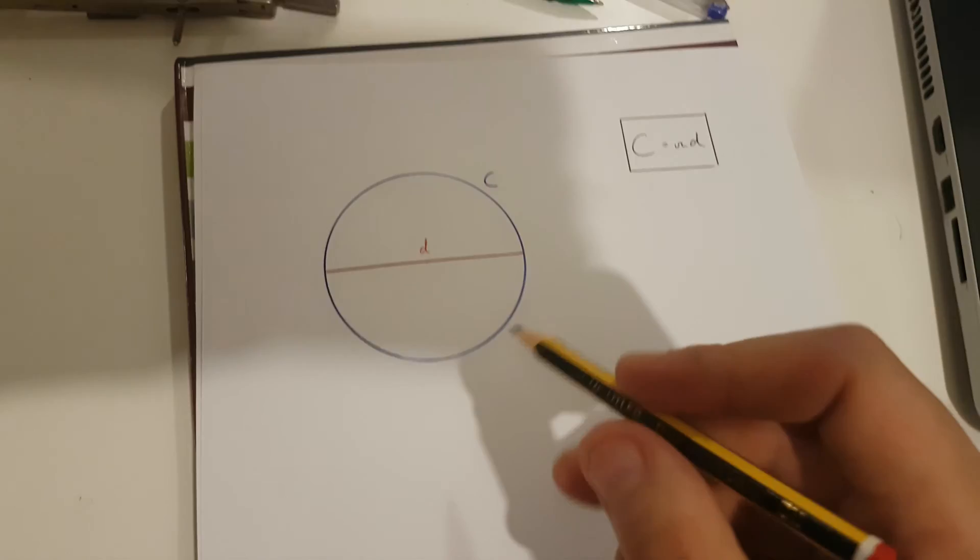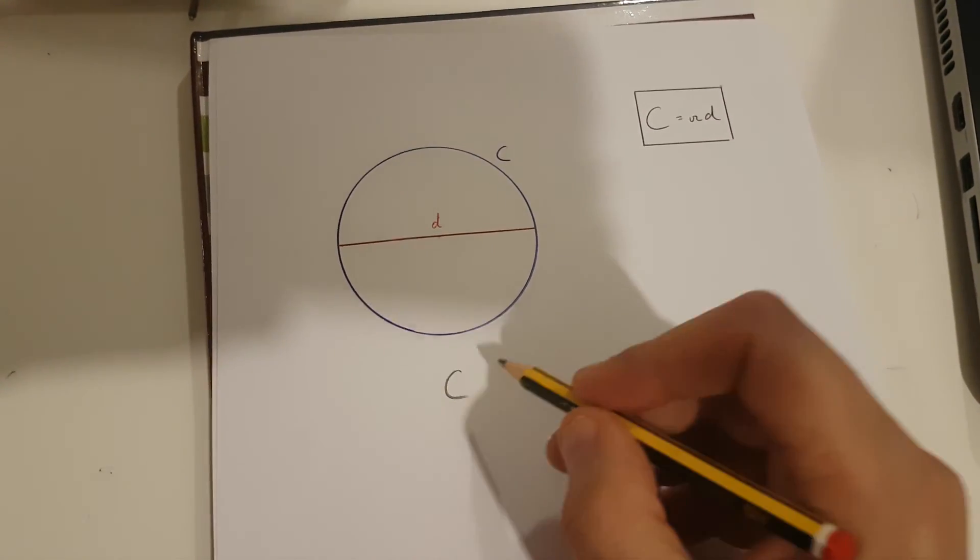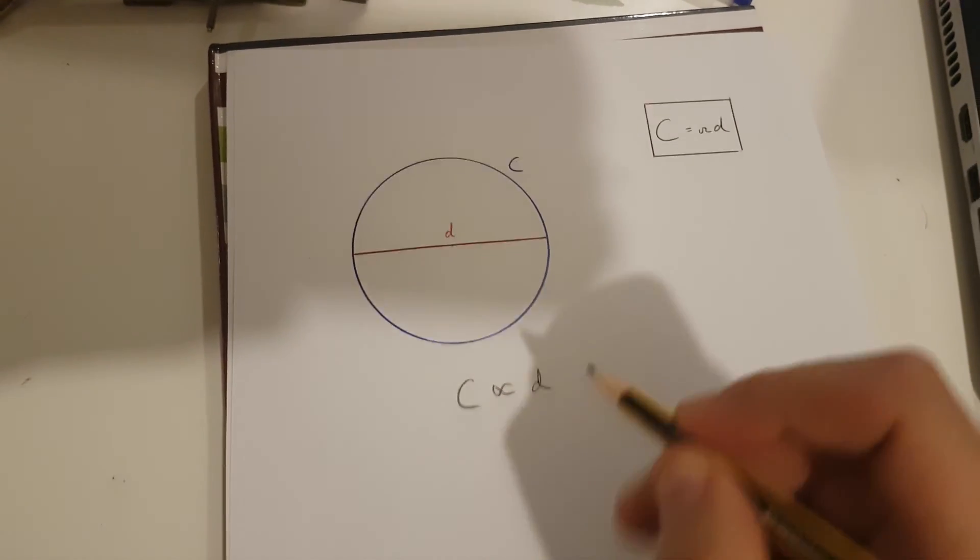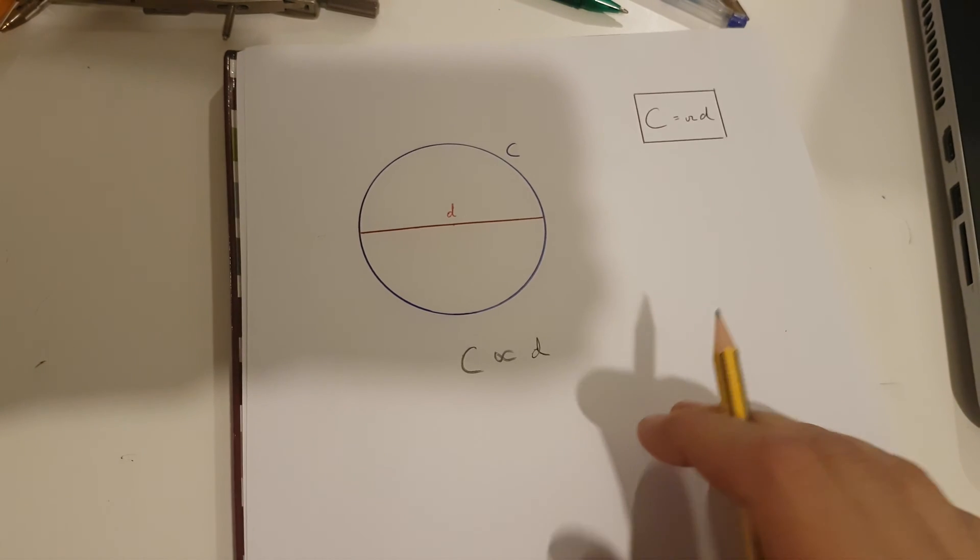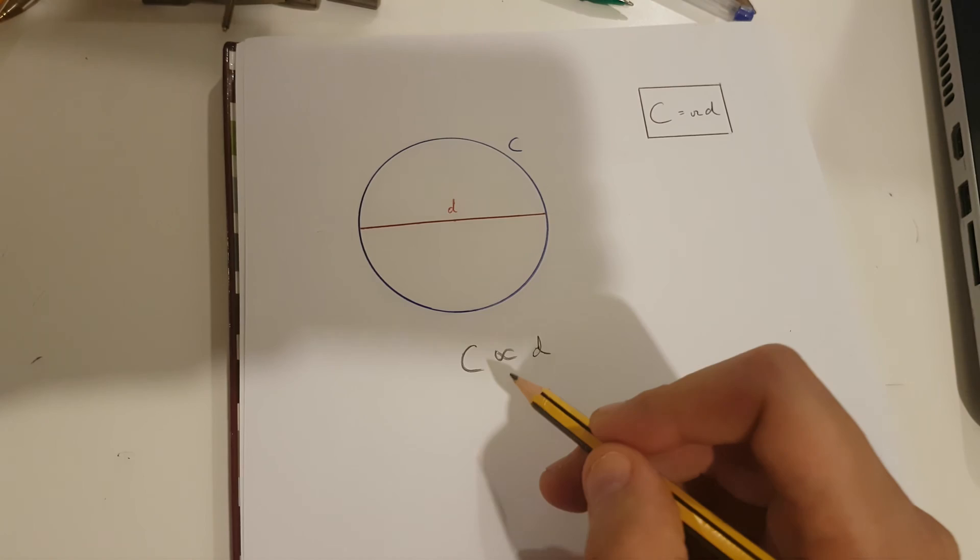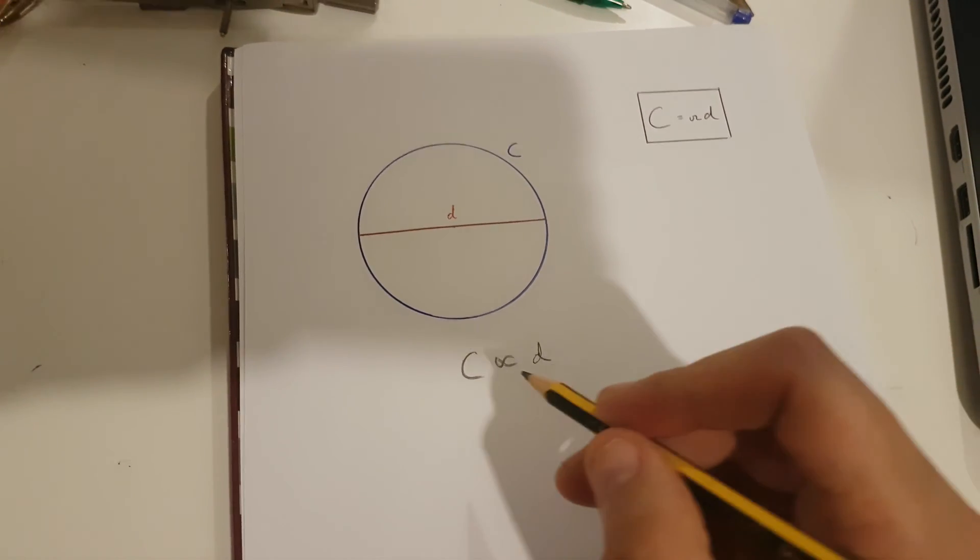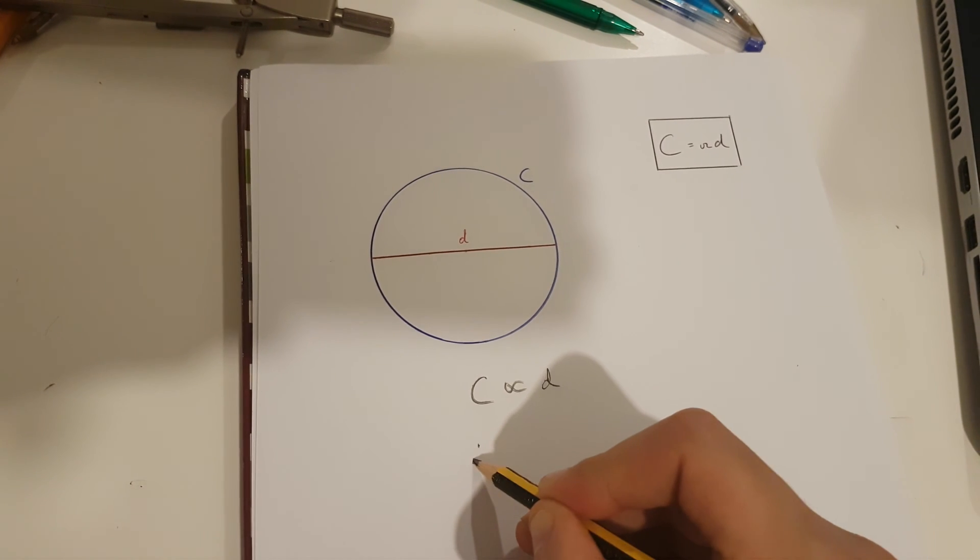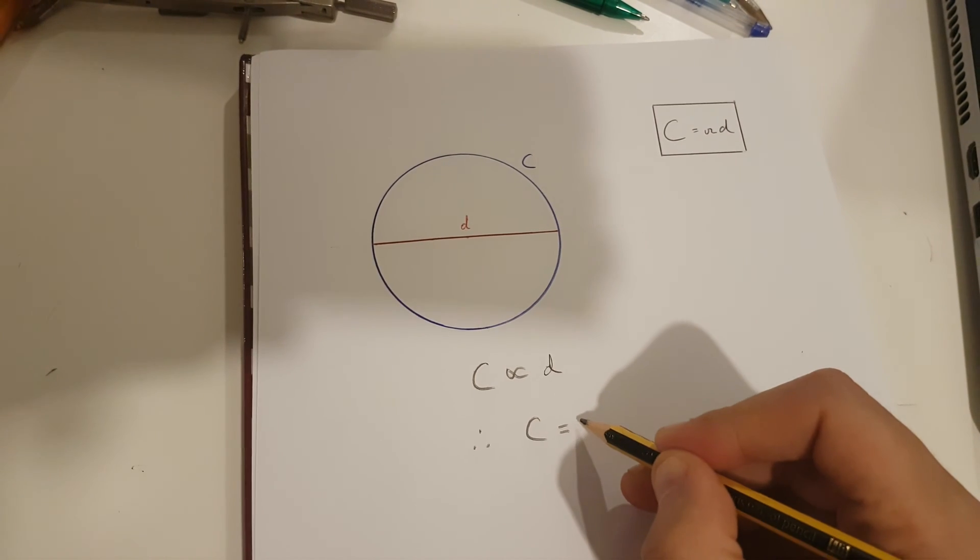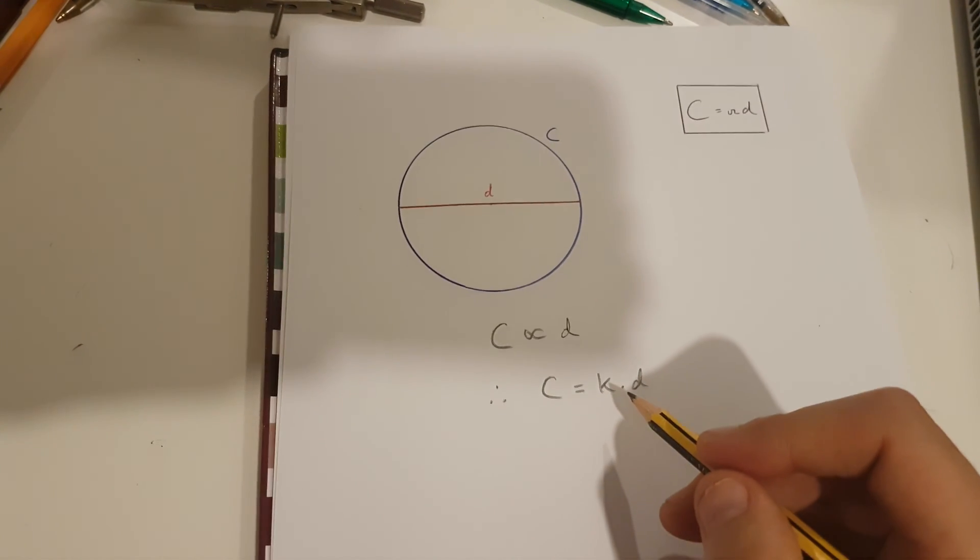This means that the circumference of this circle is proportional to its diameter. Now, because the constant of proportion is k, we must say that the circumference is equal to k multiplied by the diameter.